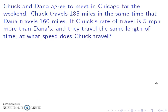Chuck and Dana agree to meet in Chicago for the weekend. Chuck travels 185 miles in the same time it takes Dana to travel 160 miles. If Chuck's rate of travel is 5 miles per hour more than Dana's, and they travel the same length of time, at what speed does Chuck travel? So anytime we're dealing with distance, we'll have our distance equals rate times time formula. And the best way to do this will be to make a chart.